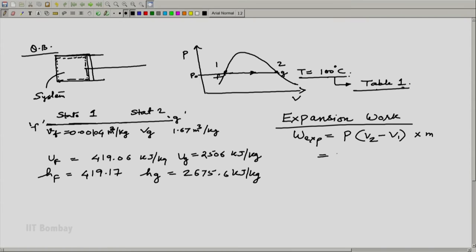If you write those values, the pressure is 0.10142 times 10 to the power 6 Newton per meter square into V2 minus V1, that is our VG minus VF here, 1.6718 minus 0.00104 meter cube per kg into 1 kg.